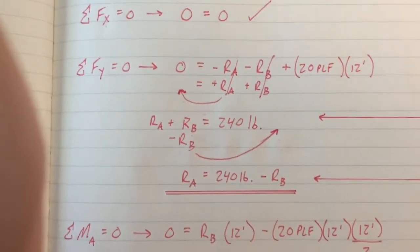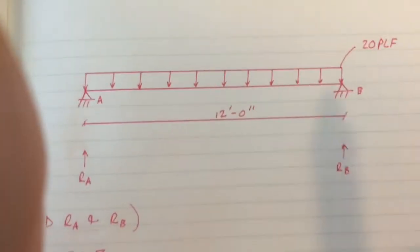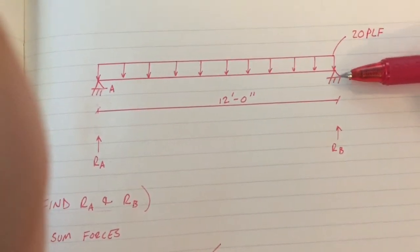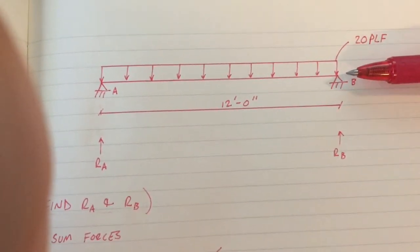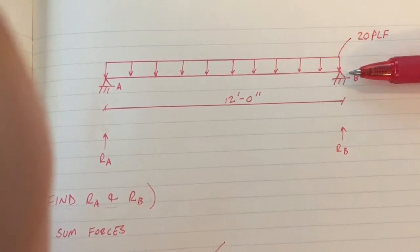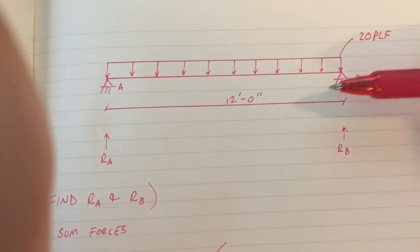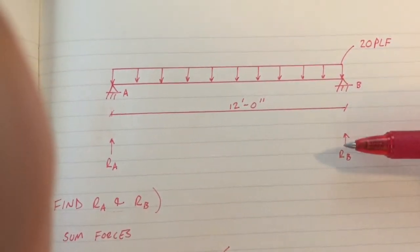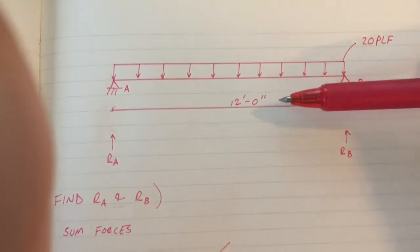So we have RB, which is reaction B. That's your force. And now we need its perpendicular distance. Its perpendicular distance to point A is 12 feet. So we have force RB times perpendicular distance of 12. That's your first value.